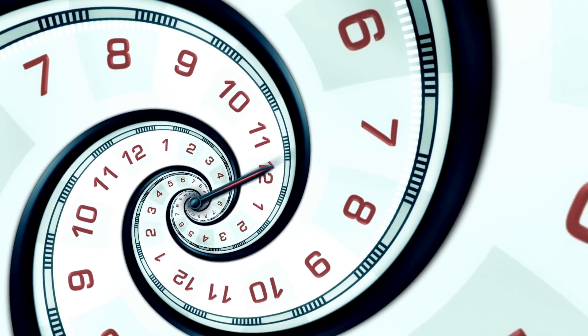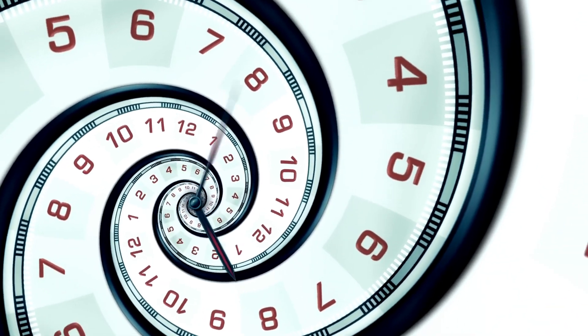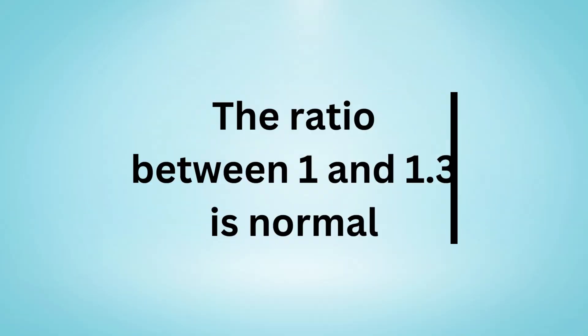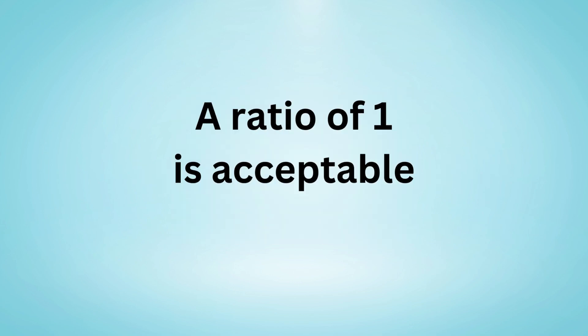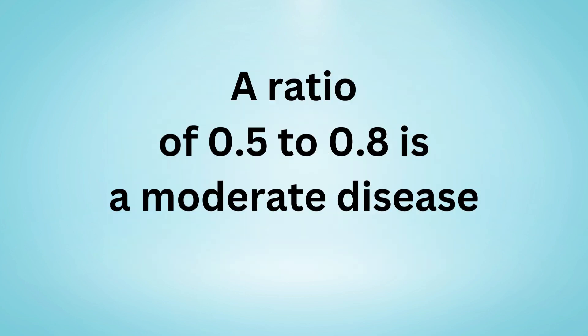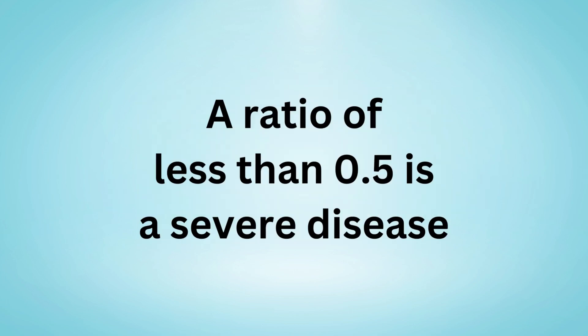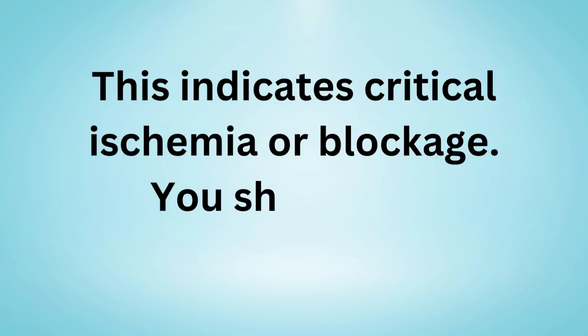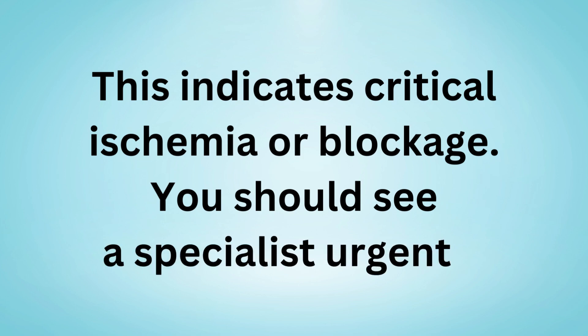Interpretation of the test results: By comparing blood pressure readings from the ankle and brachial arteries, we calculate a ratio. A ratio between 1 and 1.3 is normal; a ratio of 1 is acceptable. A ratio of 0.8 to 0.9 indicates mild disease. A ratio of 0.5 to 0.8 indicates moderate disease. A ratio of less than 0.5 indicates severe disease, which signifies critical ischemia or blockage, and you should see a specialist urgently.